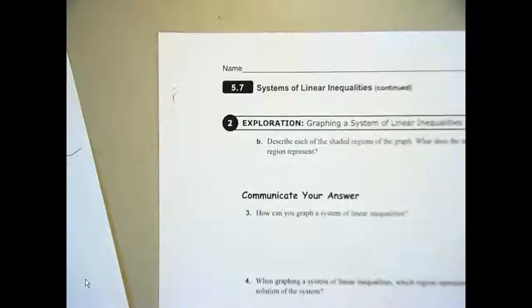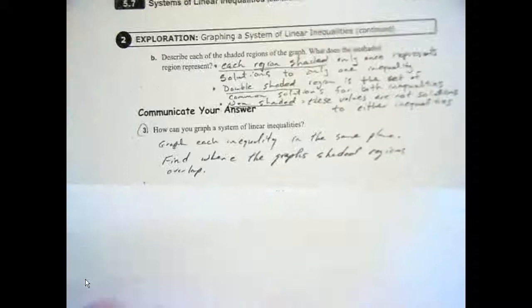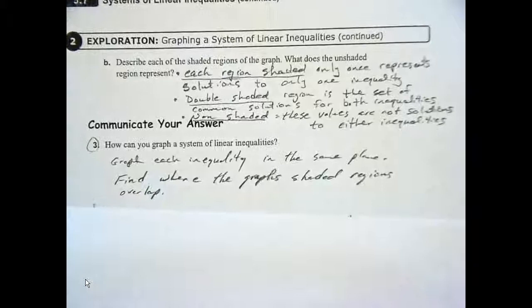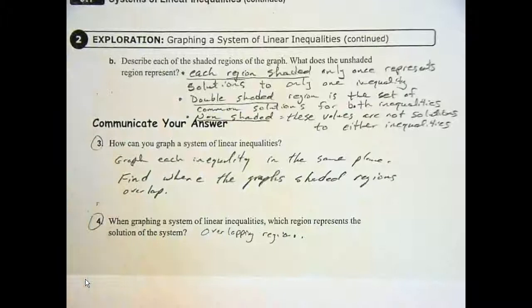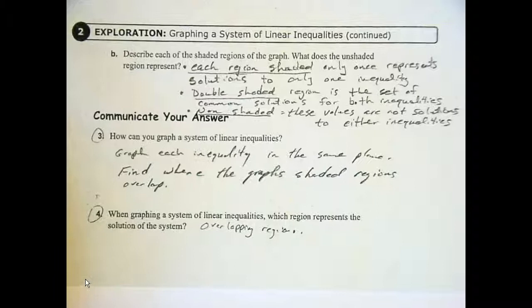So, number three, how can you graph a system of inequalities? Well, graph each inequality in the same plane and then find where they overlap. That's what we're looking for, is our solution. Number four, when graphing a system of linear inequalities, which region represents the solution of the system? The overlapping region. So, we're always looking for that overlapping region. It'll help if you do two different colors. That sometimes helps out a bit.